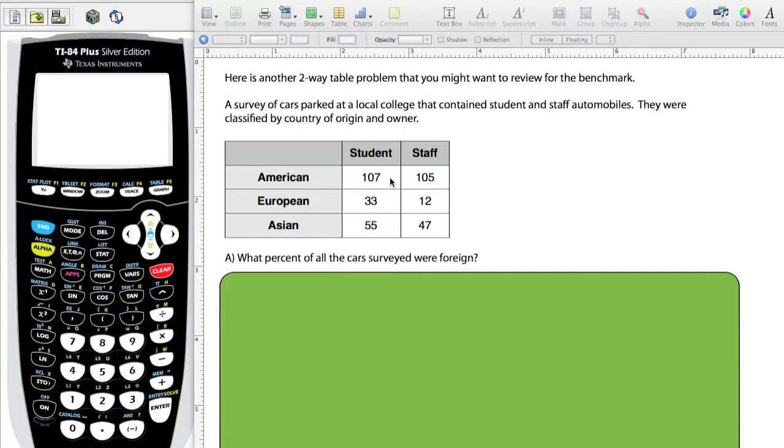What you see in the table is the different counts for each of the categories. So the students that owned American cars was 107. The staff members that owned American cars was 105. European students 33, staff European was 12, and so forth.